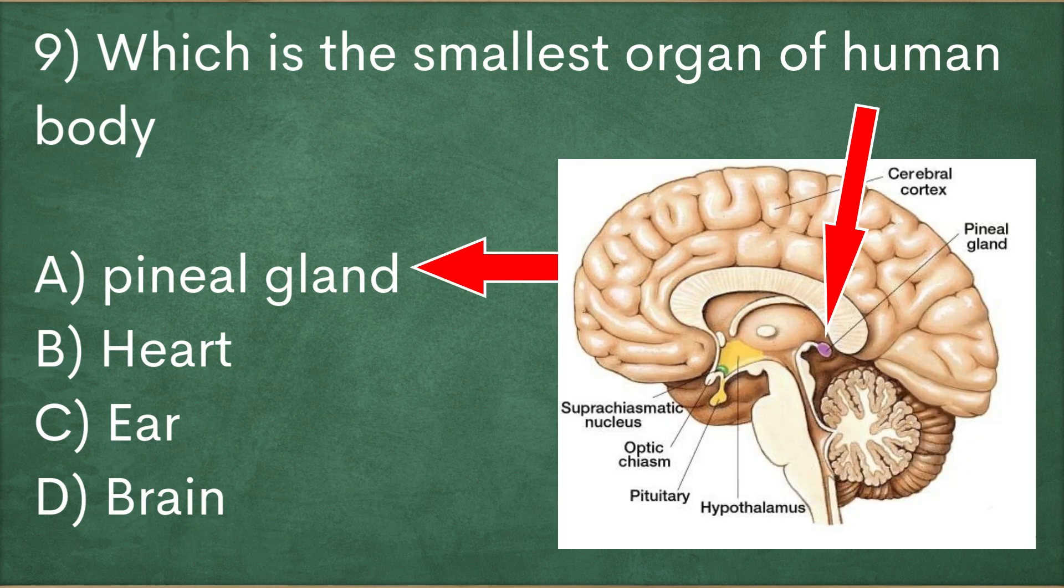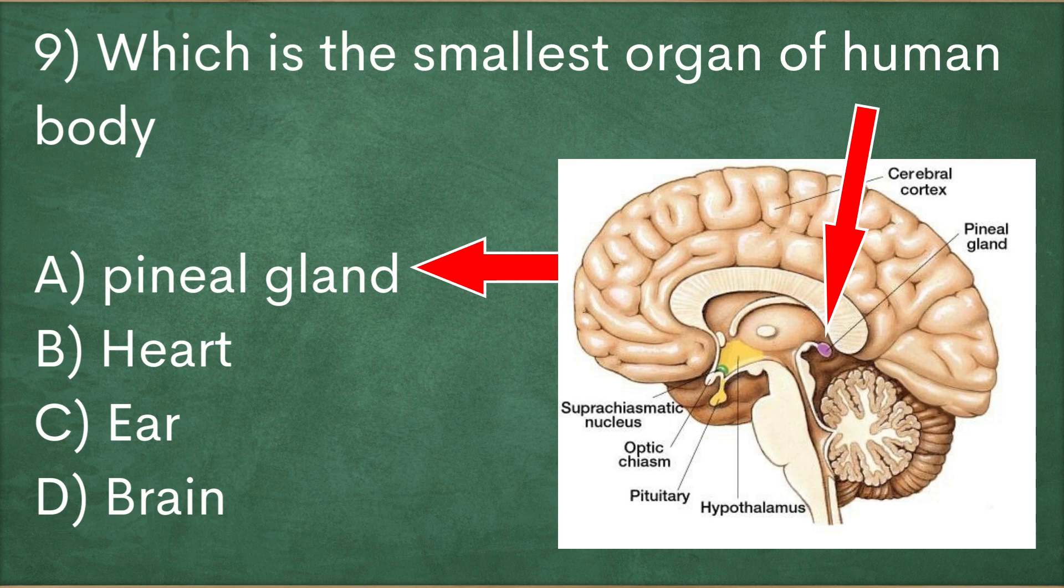The smallest organ is the pineal gland. It is situated centrally in the brain. It is the main site for the secretion of melatonin that controls the internal clock of the body.